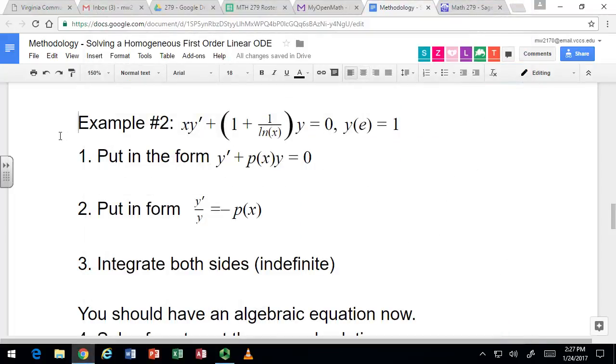Okay, in this example, we're going to see how to solve a homogeneous first-order linear ODE. The example we are doing is x times y prime plus (1 plus 1 over natural log of x) times y equals 0, and we have an initial condition that y is 1 when x is e.